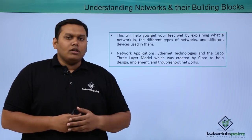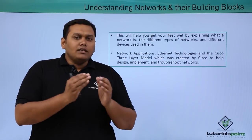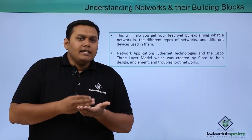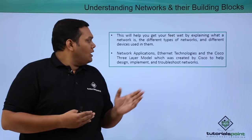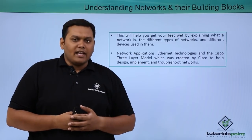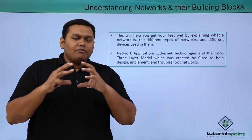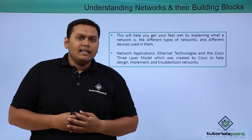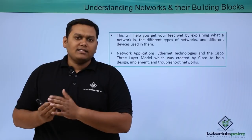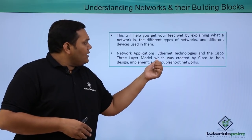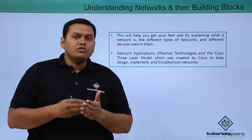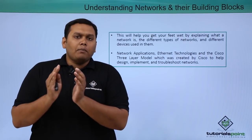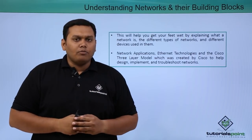The Cisco 3-layer model — Cisco is a very reputed company that develops switches, hubs, and routers. Based on this, they have developed a 3-layer model. The first layer is the core layer, the second is the distribution layer, and the third is the access layer. Based on these layers, Cisco designs, implements, and troubleshoots networks so that information is passed on to the destination without any problem.